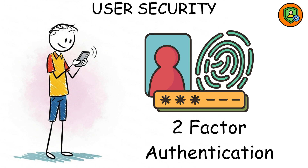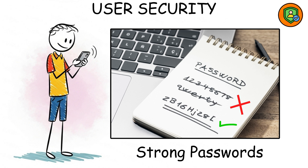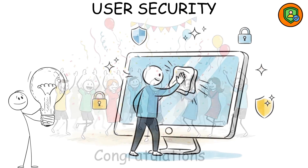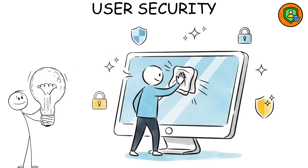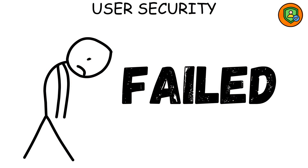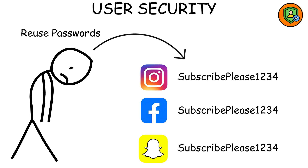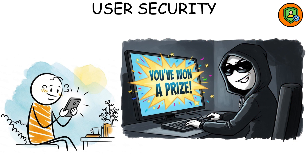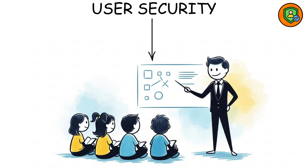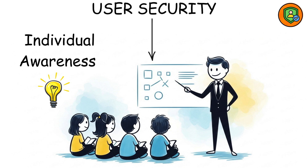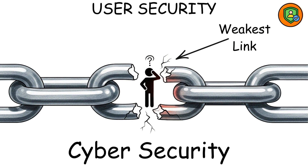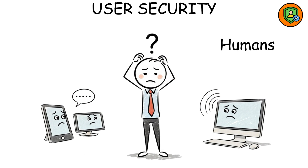If you use two-factor authentication, strong passwords, and update your software, congratulations — you're at least aware of your digital hygiene. But here's the truth: most people fail even here. They reuse passwords, click random links, and fall for 'you've won a prize' emails. This level is all about individual awareness, not fancy tools, just habits. Because the weakest link in cybersecurity is almost always the human, not the system.